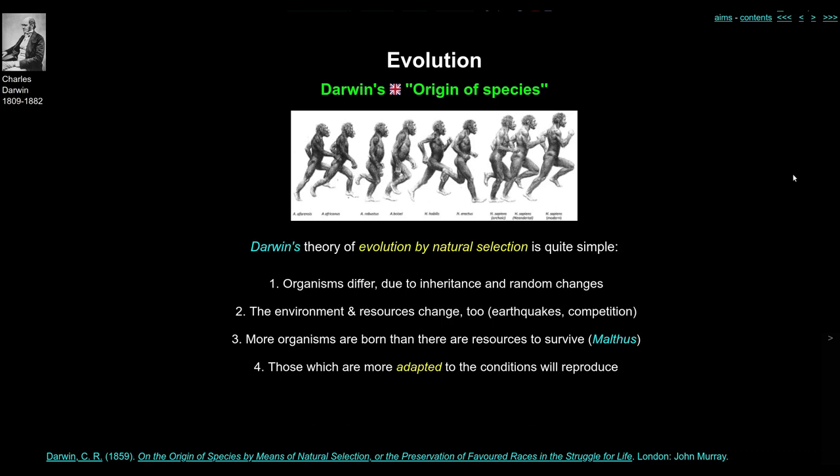An important point often missed: people talk about the 'theory of evolution', and I think that's wrong. Evolution is the fact which different theories are trying to explain. The fact of evolution is that things aren't the same now as they used to be. As long as you believe the fossil record — that dinosaurs once existed and are no longer here — we know things have changed. Darwin's contribution is actually the theory of natural selection; it's the theory of evolution by natural selection.